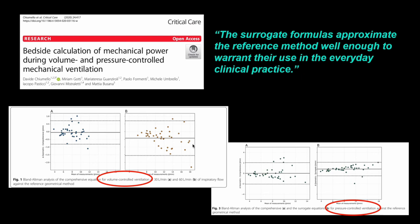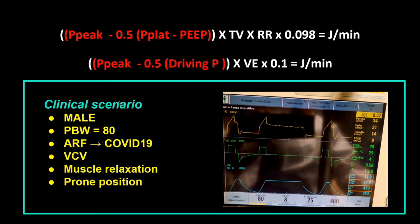Do these surrogate formulas actually come close to the reference formula? Yes — the surrogate formulas approximate the reference method well enough to warrant their use in daily clinical practice, and this has been proven in both volume control and pressure control. The Bland-Altman graphs show decent agreement with not much difference, so we can use these surrogate formulas instead of the large, complex reference formulas.